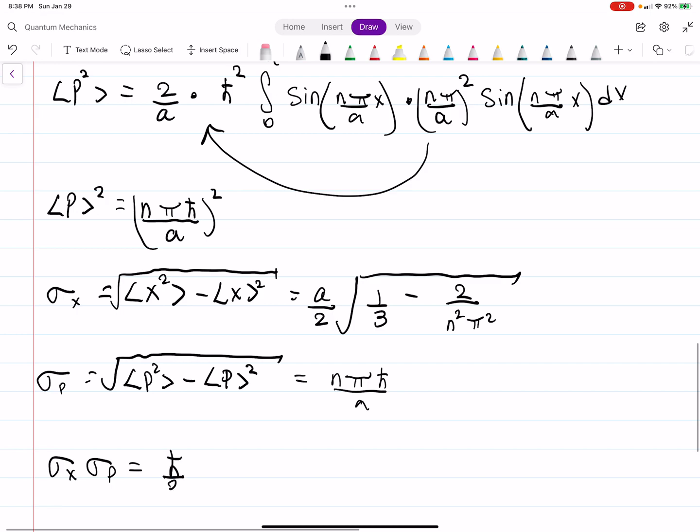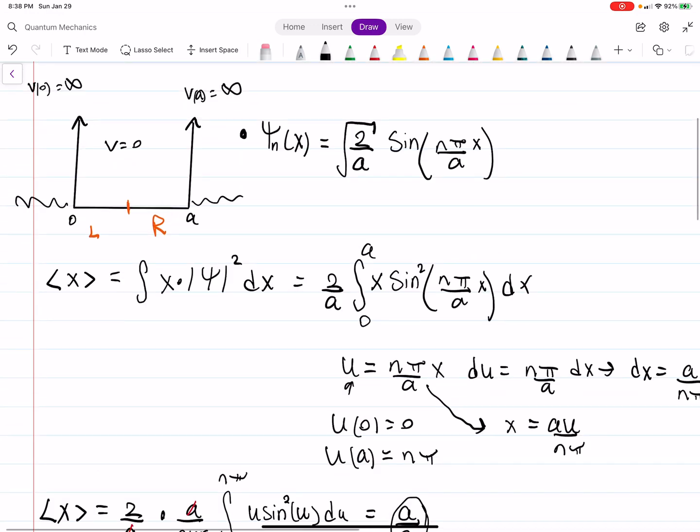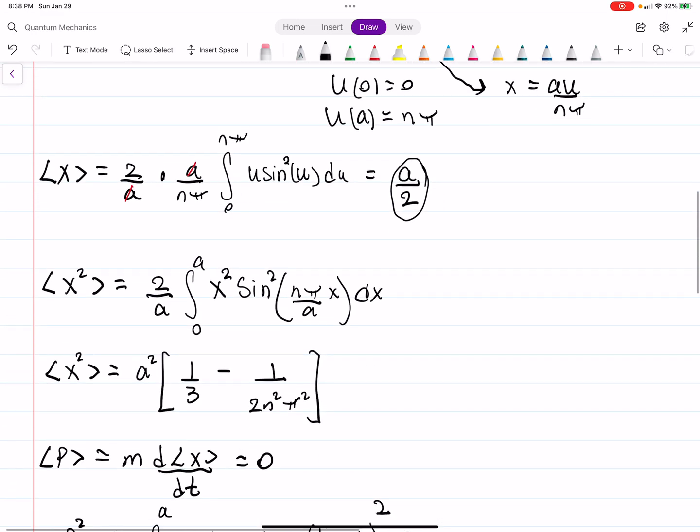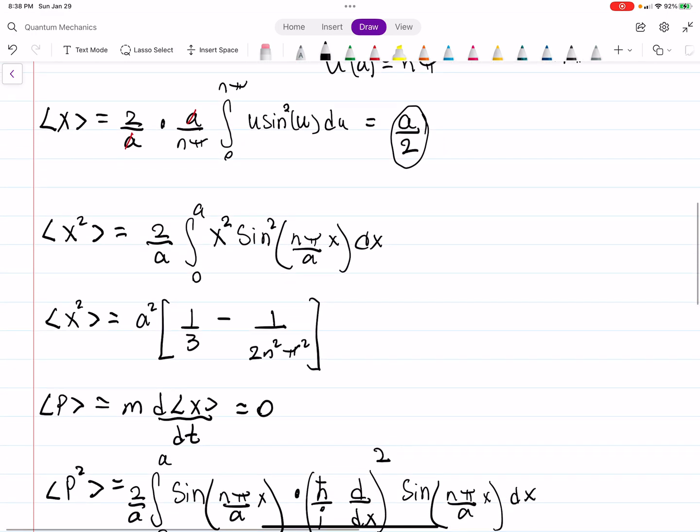And now what you can do is multiply these two together. And when you do that, you'll get h bar over 2 times the square root of n squared pi squared over 3 minus 2. And if you want to know, I think you want to know what state comes closest to the uncertainty principle.